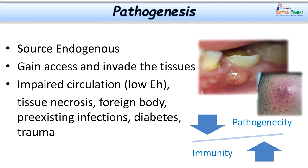Let us see how these bacteria cause infection. The source is endogenous — they gain access and invade tissue, taking the upper hand especially when they find supportive factors like impaired circulation. In tissue necrosis, inflammation causes oedema, which leads to pressure on vessels, further compromising blood supply — a vicious cycle. Tissue necrosis, oedema, and compromised blood supply ultimately lower the redox potential of surrounding tissue. Presence of a foreign body can also clog vessels leading to impaired blood supply. Diabetes adds to the pathogenesis through reduced immunity.